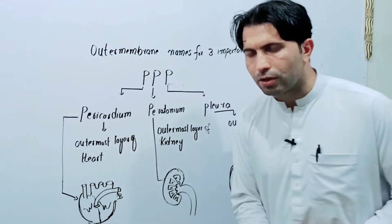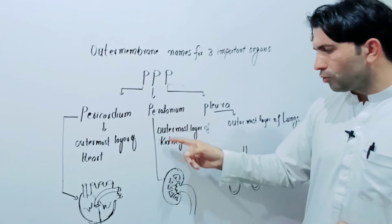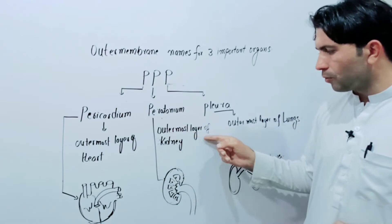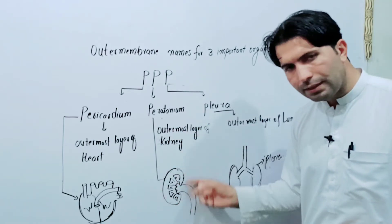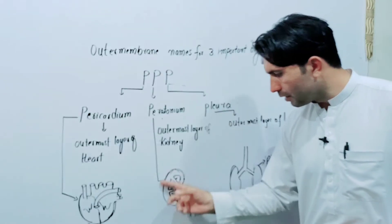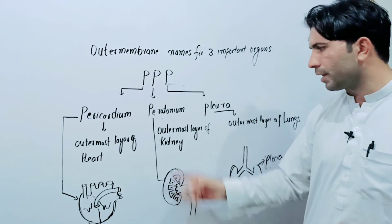Peritoneum is the outermost layer of the abdomen. This is the abdomen, and this is the outermost layer — so this layer is called peritoneum.